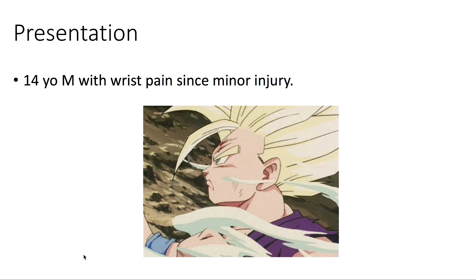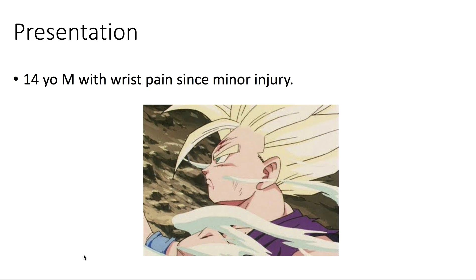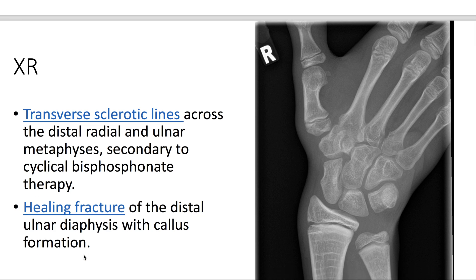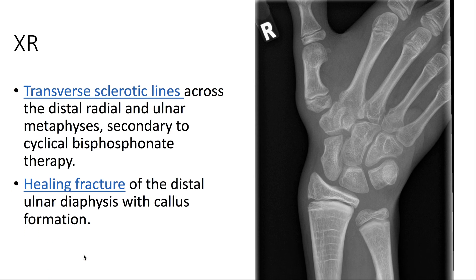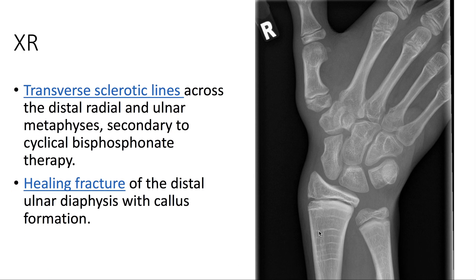Presentation: we have a 14-year-old male with wrist pain since a minor injury. On x-ray, we see transverse sclerotic lines across the distal radial and ulnar metaphyses, secondary to cyclical bisphosphonate therapy.